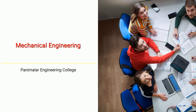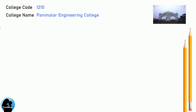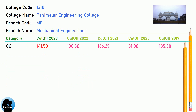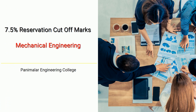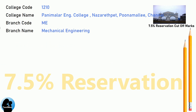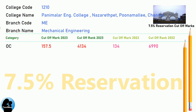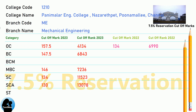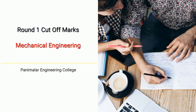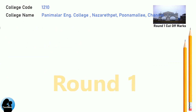DNA Cut-off for Panimalar Engineering College in Mechanical Engineering. DNA 7.5 Reservation Cut-off for Panimalar Engineering College in Mechanical Engineering. DNA Round 1 Cut-off for Panimalar Engineering College in Mechanical Engineering.